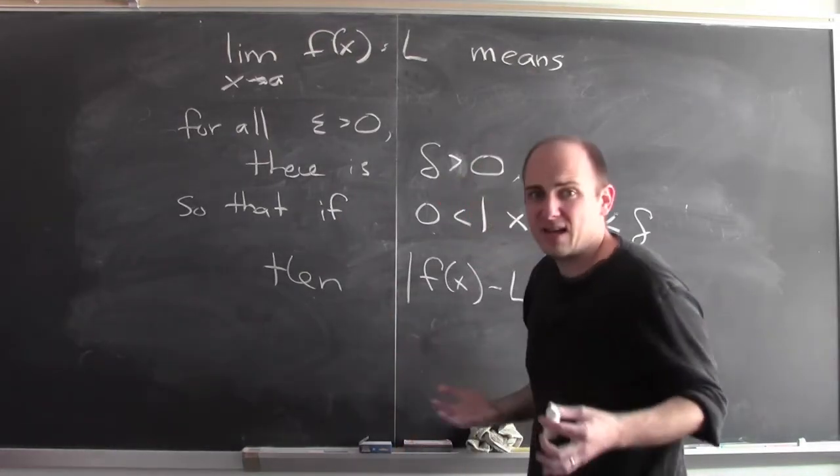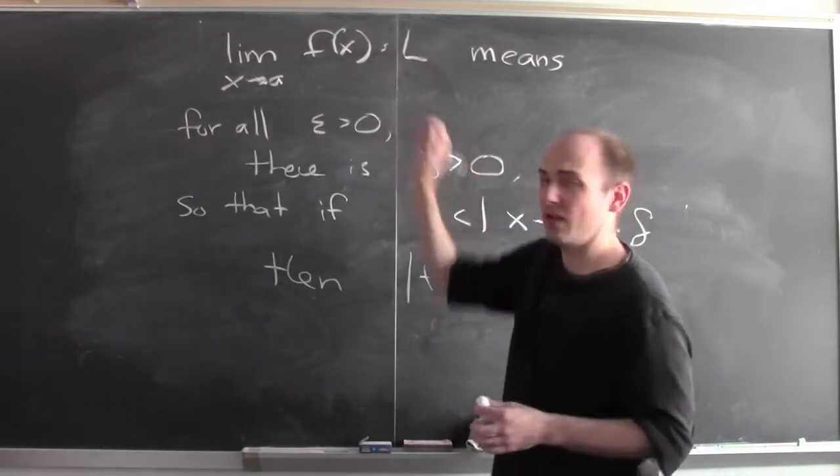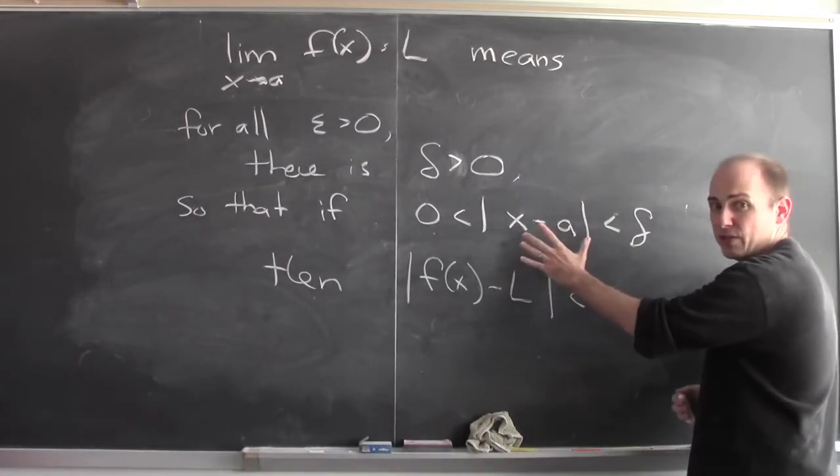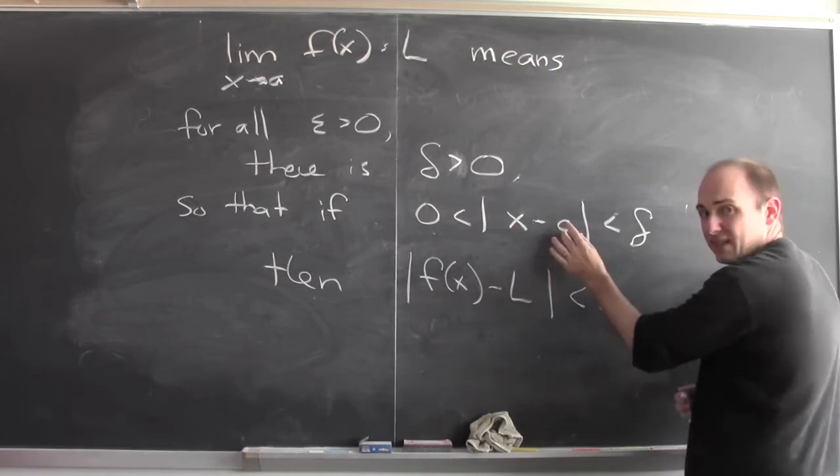So how to reconcile those two perspectives? How does this have anything to do with things being close? The key—take a look at this absolute value of difference. The absolute value of x minus a is the distance between x and a.